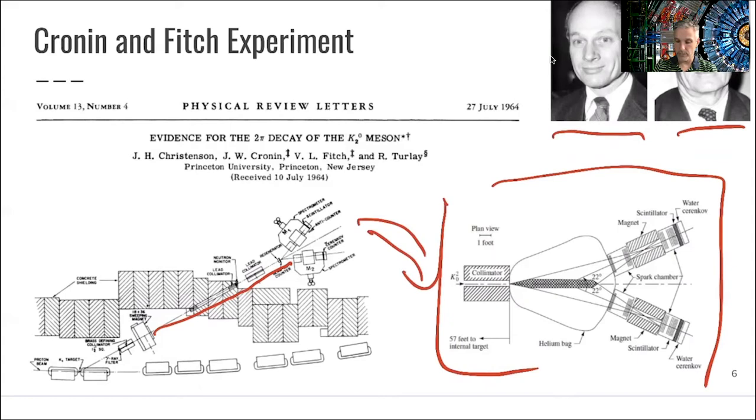You have your neutral kaons coming in, the K2s, and then you look for two pi decays. The instrumentation and how we actually would do this is part of later discussion that we actually talk about detectors in more detail.